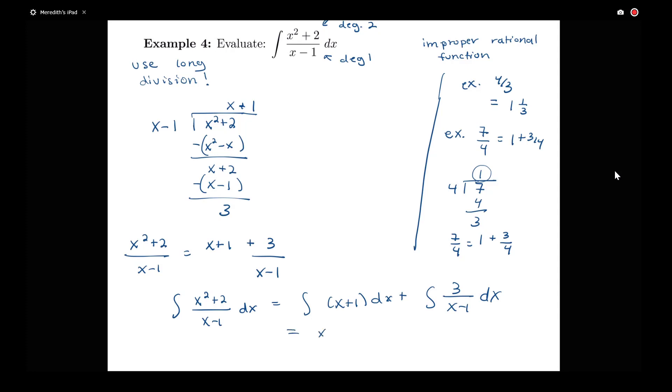By using a rule, integral of x plus 1, I'm going to have x squared over 2 plus x. Then when I integrate 3 over x minus 1, that's going to be 3 times log of the absolute value of x minus 1.